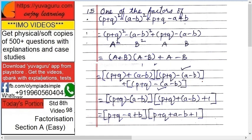So these are the two factors: (p+q-a+b)(p+q+a-b+1). That is a factor.